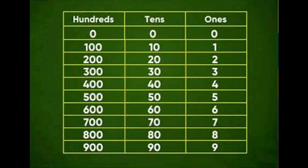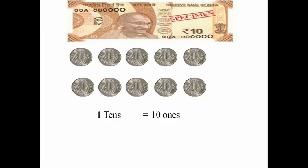Did you understand, students? Yes. Next, look at the image — a 10 rupees note. Below it, how many 1 rupee coins are there? Let us count: 1, 2, 3, 4, 5, 6, 7, 8, 9, 10. In a 10 rupee note, there are 10 one-rupee coins.